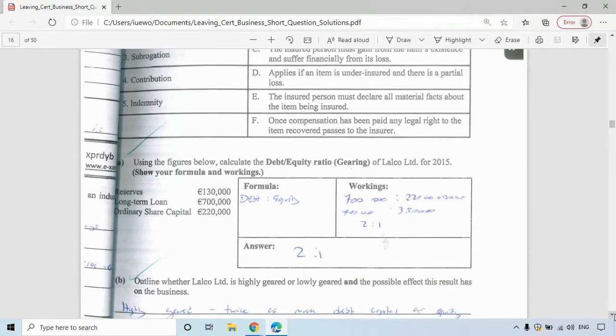Next question: you have to talk about the debt to equity ratio for Lalco Ltd. Debt is borrowing from the bank, loans, things like that. Equity is the money inside the business. Debt to equity would be the loan to the reserves and ordinary share capital. So the loan of seven hundred thousand is to the two hundred twenty thousand plus one hundred thirty thousand added together—seven hundred thousand is to three hundred fifty thousand. The answer is two is to one. The answer to the gearing ratio—they want the answer as a ratio.